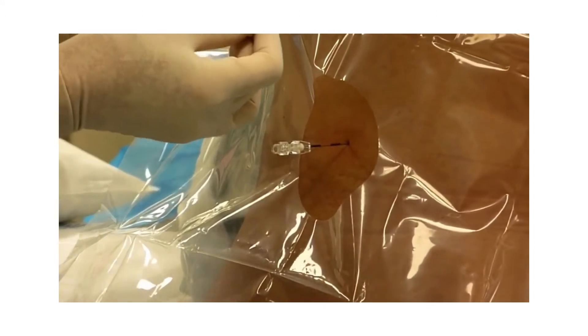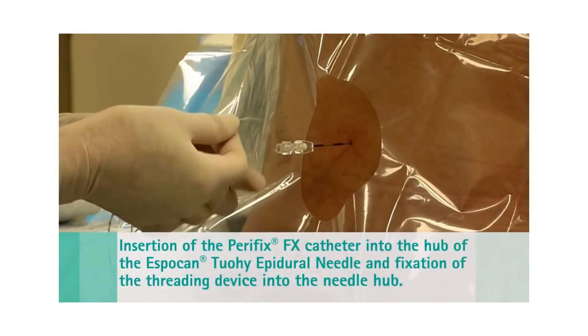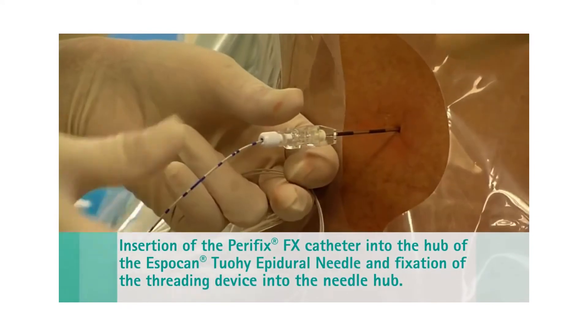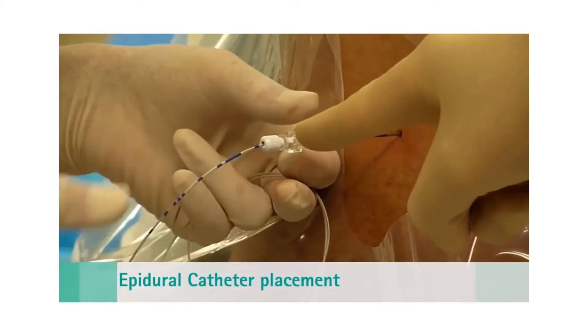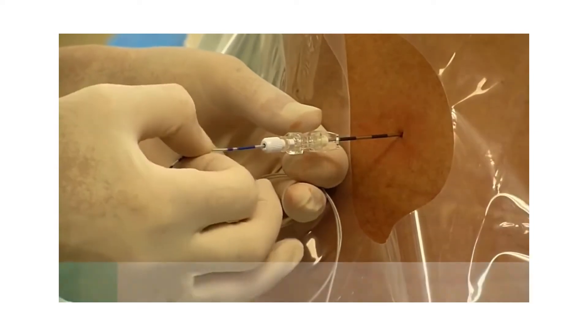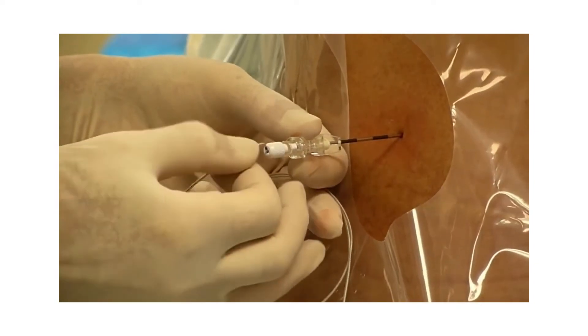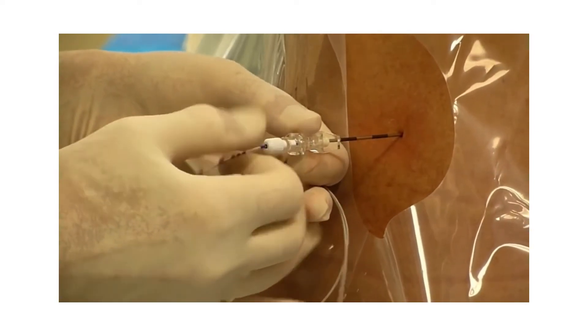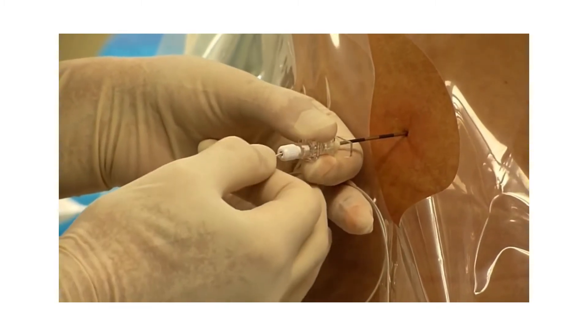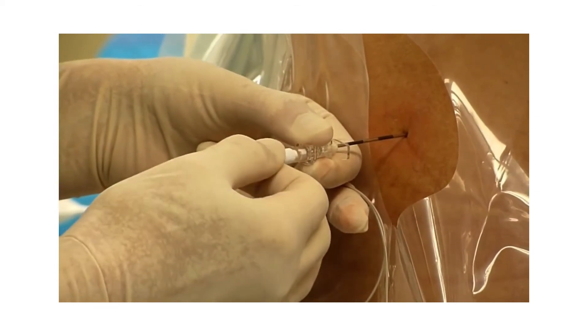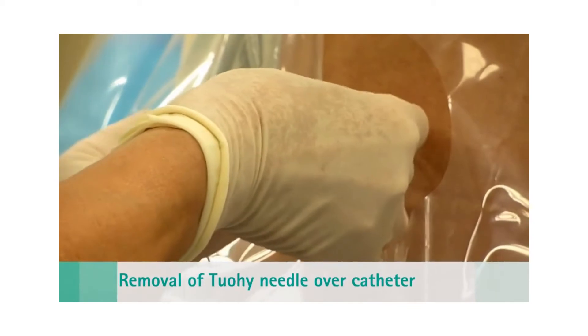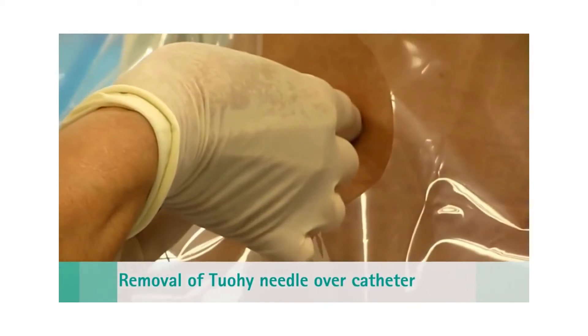We use the threading device, which will sit right here in the hub of the epidural needle. The catheter has markings. The double mark signifies 10 centimeters of catheter length, and the triple mark signifies 15 centimeters of catheter length. As you can see, the catheter inserts very easily. Now we're going to just slip the needle out while leaving the catheter in.